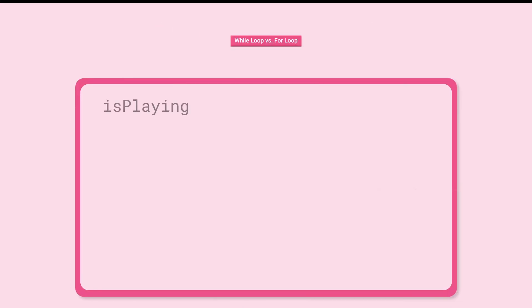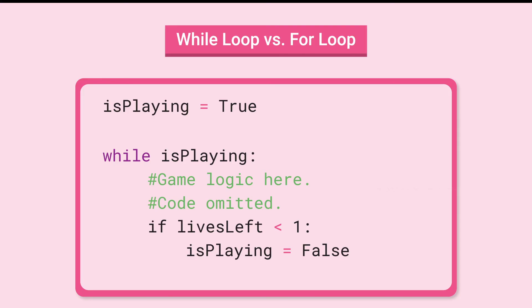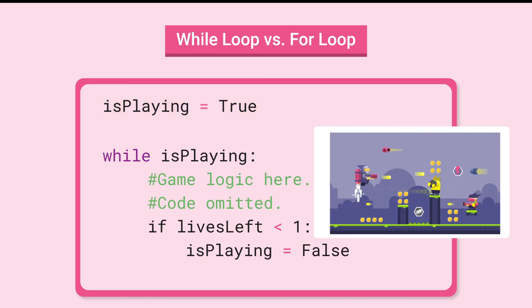Yes, while loops are useful when you're not sure how many times the code needs to repeat. Here's an example of how it can be used to control a game. In this code, the variable isplaying works like a switch. When isplaying is true, the game is on. The while loop, which houses the game logic or the fun part of the game is executed.